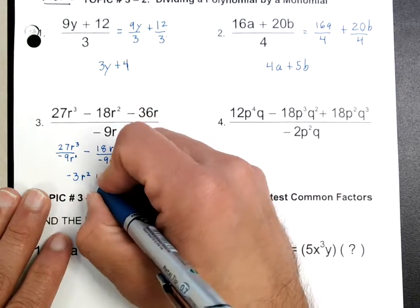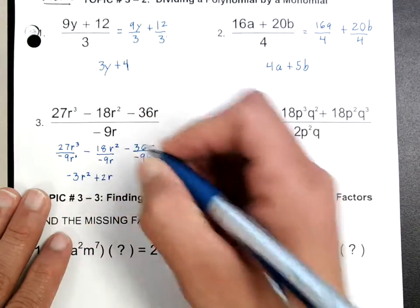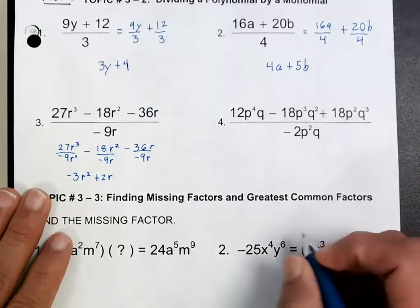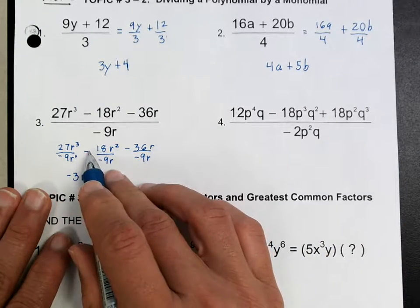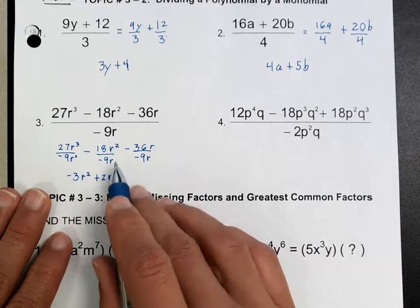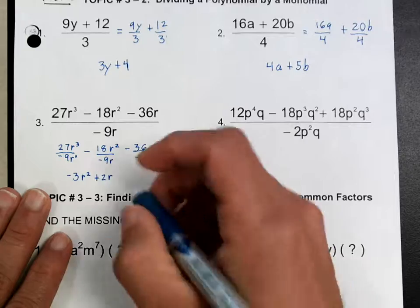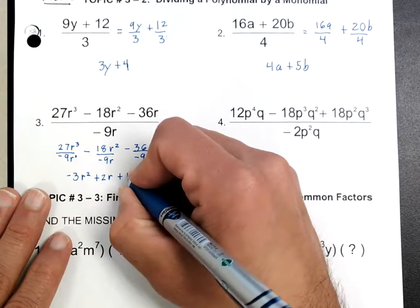And this next part you have a 2R. Same idea — you have a negative 18 divided by negative 9. You get 2. And finally this would be a 4. Notice that the R's cancel here.